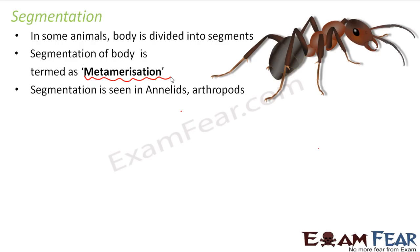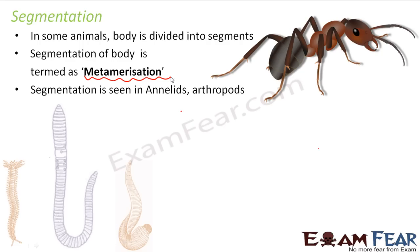Where do we see this kind of segmentation? It is seen in annelids and arthropods. In annelids like earthworms, Nereis, and leech, the body is divided into small ring-like segments, and each segment has a specific function. In annelids, most of these segments help in locomotion.